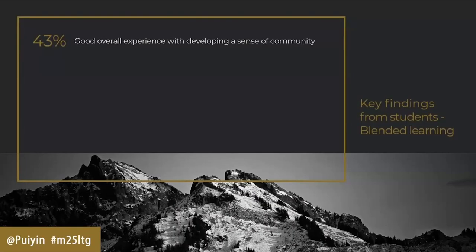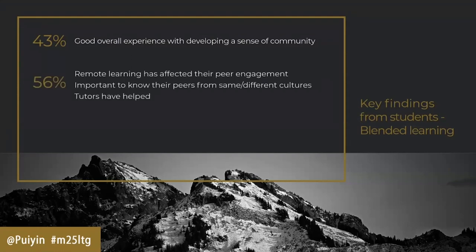43% of students — just under half — felt there was an overall good experience with blended learning and developing a sense of community, which was down to support from staff and creating online communities. But 56% — over half the students — felt that remote learning affected their peer engagement, because they felt it was important to know their peers' background, particularly their cultural background. Something about engaging through a screen was affecting that, though they acknowledged tutors had tried.